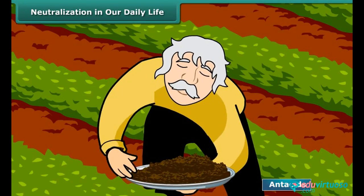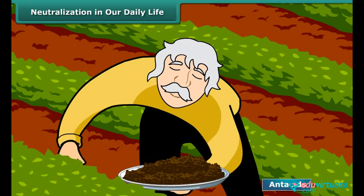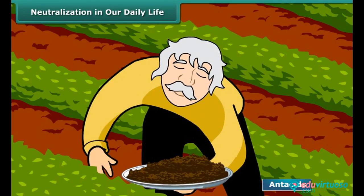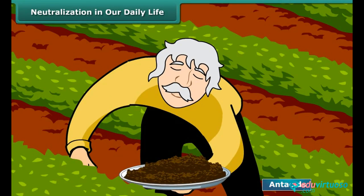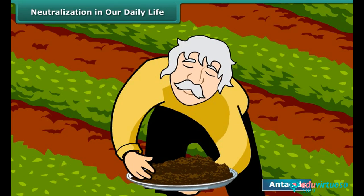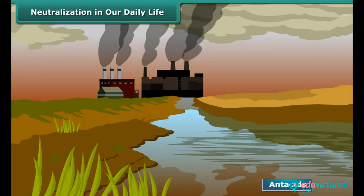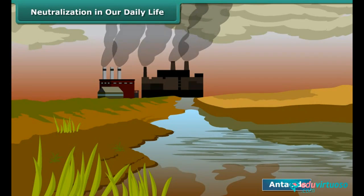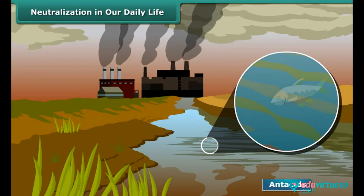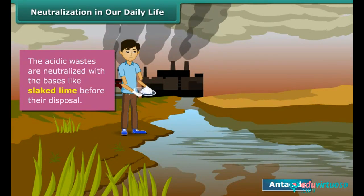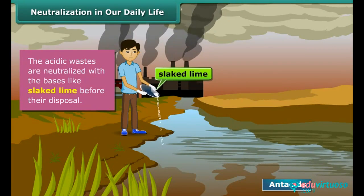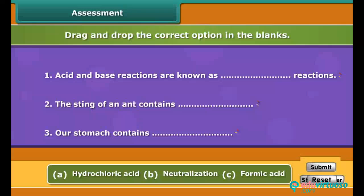Soils used for cultivation can become acidic or basic in nature. Basic soils are treated with organic compounds that release acid, making the soil neutral. Many factories release acidic wastes which, after falling into water bodies, damage them — as a result, living organisms in the water die. The acidic wastes are neutralized with bases like slaked lime before their disposal.